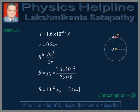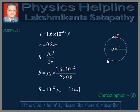It is given in the question that the radius of the circular path is equal to 0.8 meters, so R = 0.8 m. The magnetic field produced at the center of a current-carrying circular loop is given by B = μ₀I / 2R, because we are considering the number of turns equal to 1 — a charged particle moving in a circular path is equivalent to a current-carrying loop of one turn.